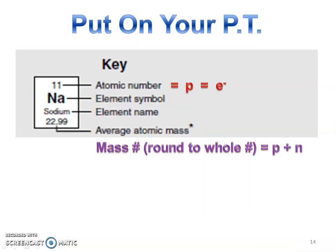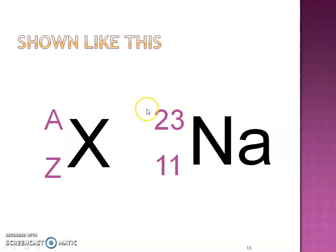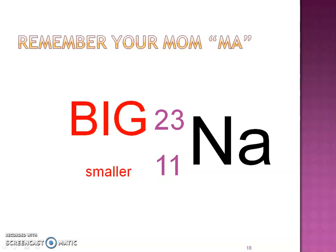On your periodic table cheat sheet, write that the average atomic mass — or atomic mass or atomic weight, whatever your key says — rounds to a whole number for the mass number, and it equals protons plus neutrons. Sometimes the mass number and atomic number are represented by the letters A and Z in notation. The mass number is on top and the atomic number is on the bottom — I remember it as 'ma.' The mass number is always the bigger number, so the bigger number goes on top.